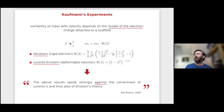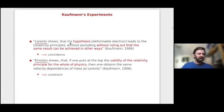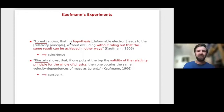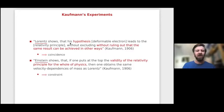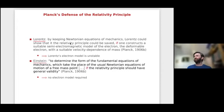According to Kaufmann, the Abraham electron was the most plausible model, and his results were strongly against the Lorentz–Einstein model. But Kaufmann also noticed something important: his hypothesis of the deformable electron leads to the relativity principle. Lorentz showed that his hypothesis of the deformable electron leads to the relativity principle, without ruling out that the same result could be achieved in other ways. Lorentz and Einstein have the same theory, but with a conceptual difference: Lorentz starts with his model of the electron and claims that if the model is correct, the relativity principle can be saved.